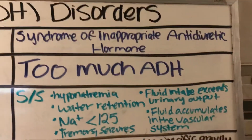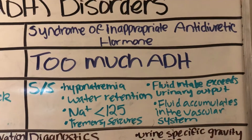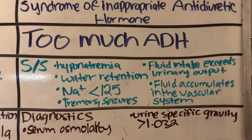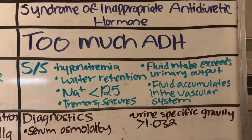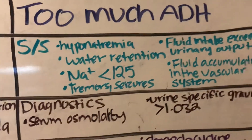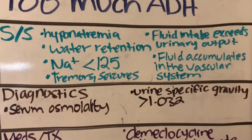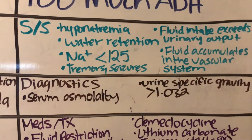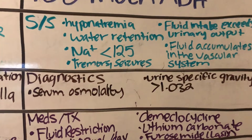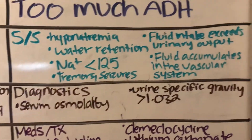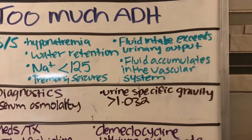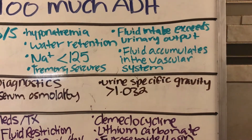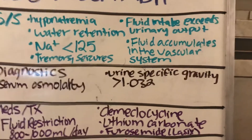Now for syndrome of inappropriate antidiuretic hormone — this is too much ADH, so it's holding in too much fluid. They're going to show hyponatremia, low salt levels, and water retention. Their sodium can be less than 125 and they're going to show tremors or seizures. Also, fluid intake exceeds urinary output and fluid accumulates into the vascular system versus the peripheral system.